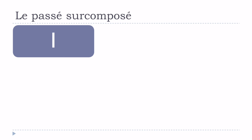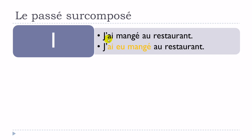Let's see how to make the passé surcomposé with a few examples. First: j'ai mangé au restaurant — that's le passé composé — you use avoir or être at the present form, then the participe passé. For the passé surcomposé: j'ai eu mangé au restaurant. The participe passé 'mangé' doesn't change; it's the first part — avoir — that changes: it moves to the passé composé form.